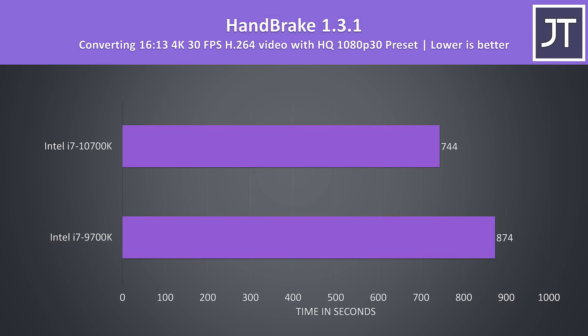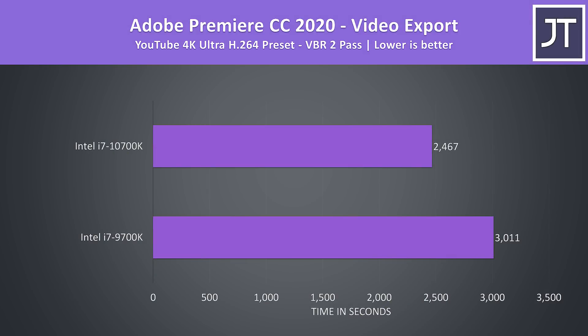Handbrake was used to convert one of my 4K laptop review videos to 1080p, and the 10700K was about 17% faster in this test. Adobe Premiere was used to export one of my laptop review videos at 4K — I've used VBR 2-pass so no iGPU usage — and the 10700K was able to complete this task about 22% faster.